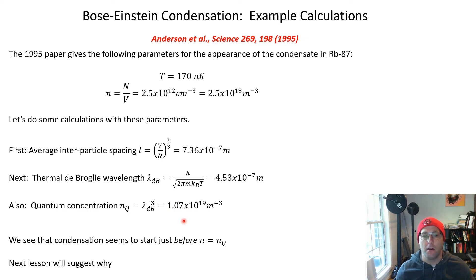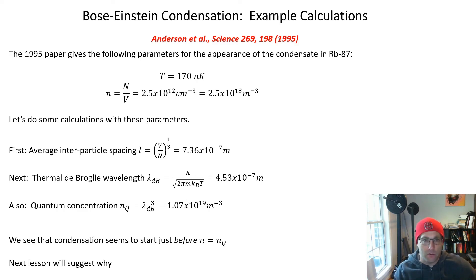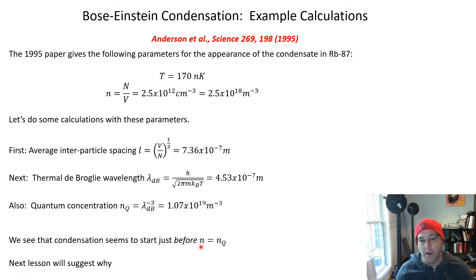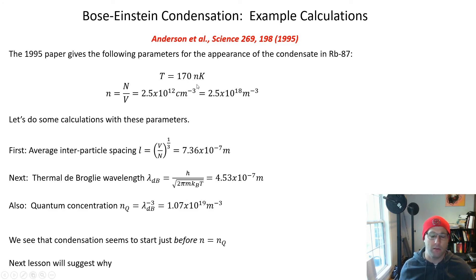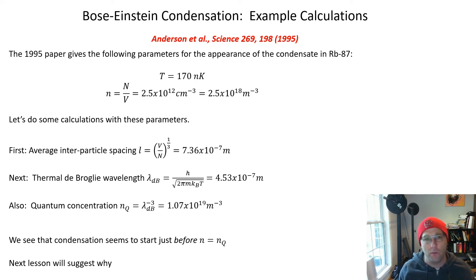The basic idea is that quantum nature is just barely starting to pick up when the number density is about equal to the quantum concentration, and it seems to start a little bit before — we'll be able to see why in the next mini lesson when we do the theory. At these conditions you start to have a condensate, but it's not all condensate; some atoms are still thermally distributed according to the Bose distribution. We'll see you in the next lesson where we do a fairly difficult theory calculation about how to describe the actual phase transition in detail.